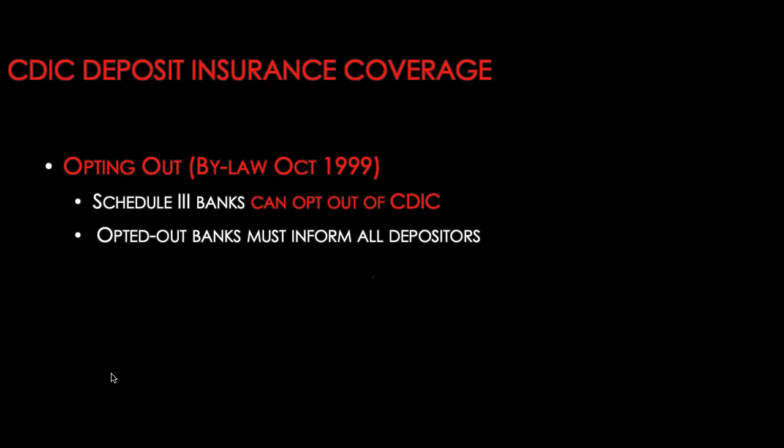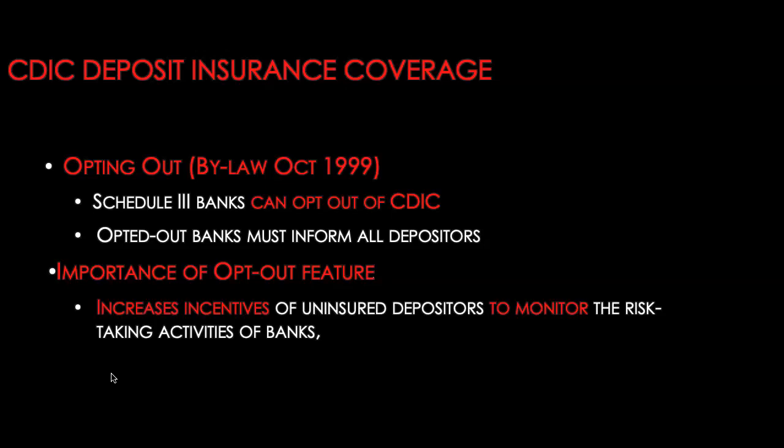An opted-out bank must inform all of its depositors that their deposits are no longer insured by CDIC. Opting out might seem like a bad thing initially because deposits are no longer insured in the event of bank failure; however, when there is no deposit insurance, it actually creates a bigger incentive for depositors to enforce market discipline by withdrawing deposits from the bank if they feel the bank is taking on too much risk. As uninsured depositors increase their monitoring of the bank, it will actually reduce the risk-taking activities of these banks, thereby reducing moral hazard.